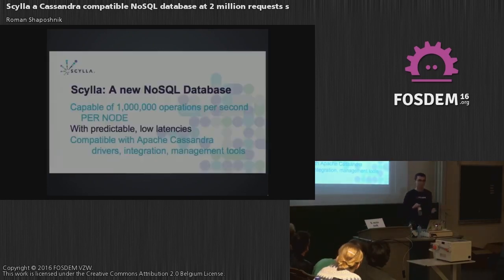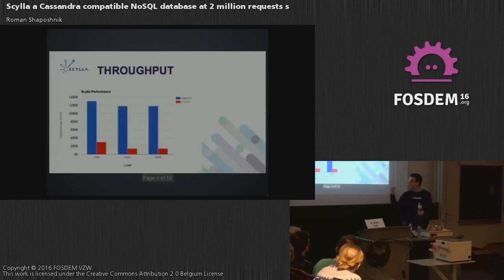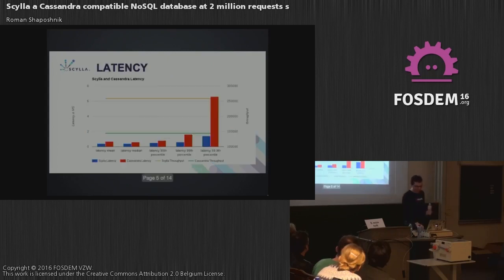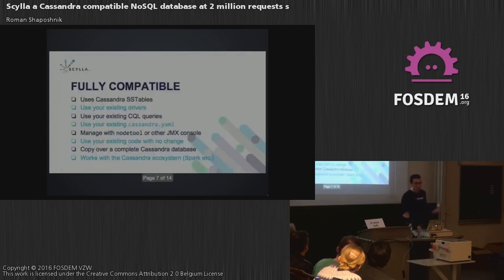But let's talk about Scylla first. Scylla is a new NoSQL database capable of this jillion transactions per second, and it's fully compatible with Apache Cassandra. So a few obligatory graphs — the blue one is Scylla, the red one is Cassandra. We're crushing it across the board.